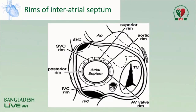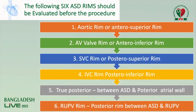These are the rims of the interatrial septum: aortic rim, AV valve rim, IVC rim, posterior rim, SVC rim, and superior rim. There are 6 rims in atrial septal defect.